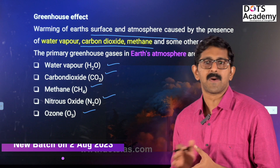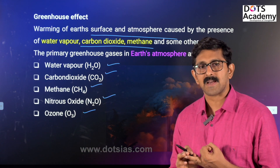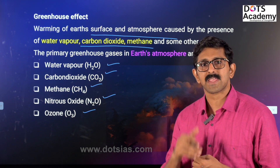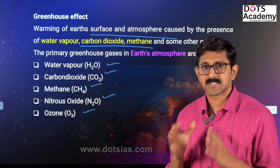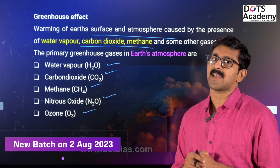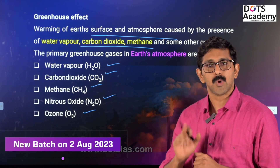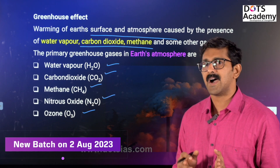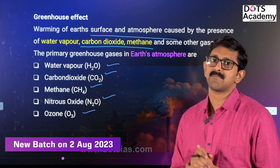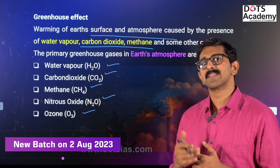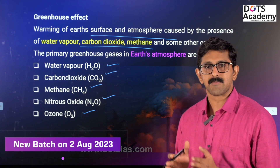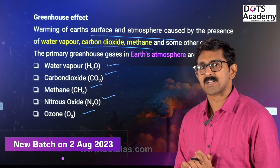The atmosphere's constituent particles include water vapour, dust particles, and gases. The key gases are nitrogen at 78%, oxygen at 21%. Oxygen is not a greenhouse gas. The main greenhouse gases in the atmosphere are water vapour, carbon dioxide, ozone, methane, and nitrous oxide.